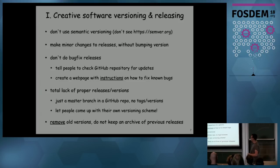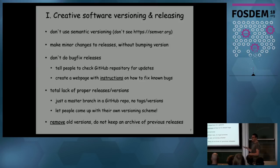Don't do any bug fix releases. Just have a release and tell people there's a GitHub repository that has all the bug fixes — pull them from there and apply the patch. Or even better, create a web page with instructions — not a patch file, but instructions on how to fix the bugs you know about. Or just don't do any releases at all: have a GitHub repo, point people to the master branch, and tell them it's always stable. Also, if you publish a new version, remove the old ones — nobody wants to use them anymore, the new stuff is better.